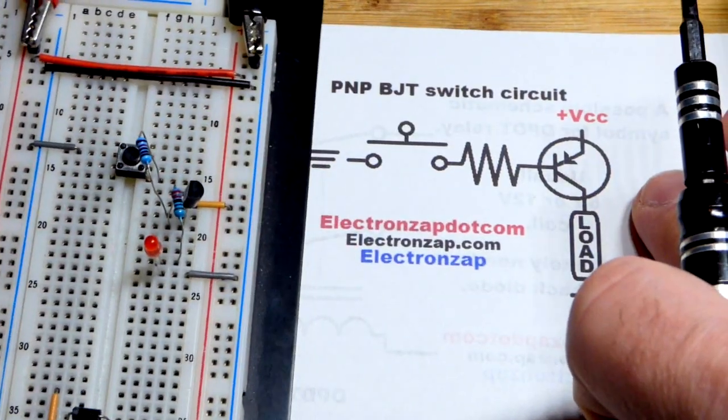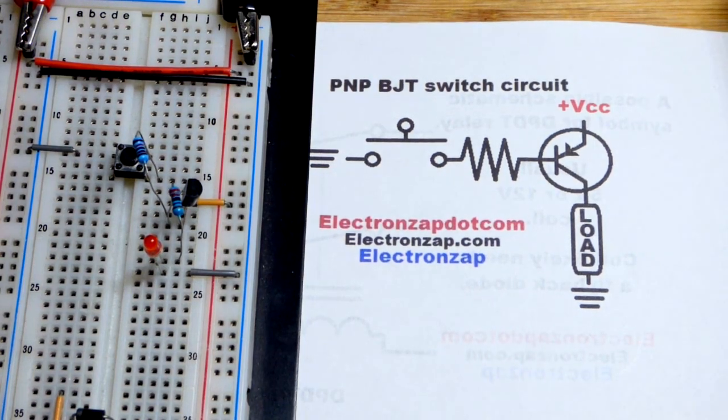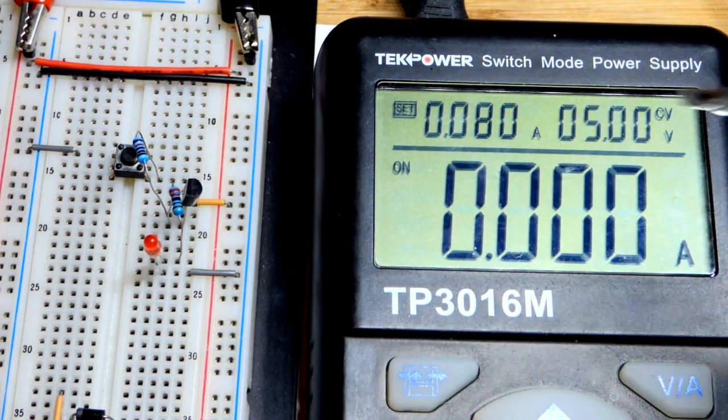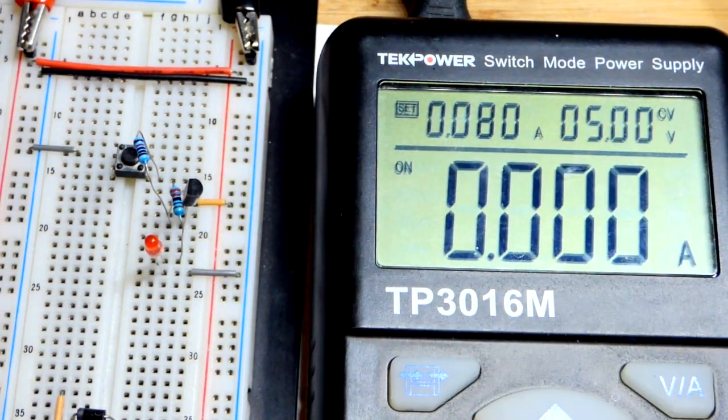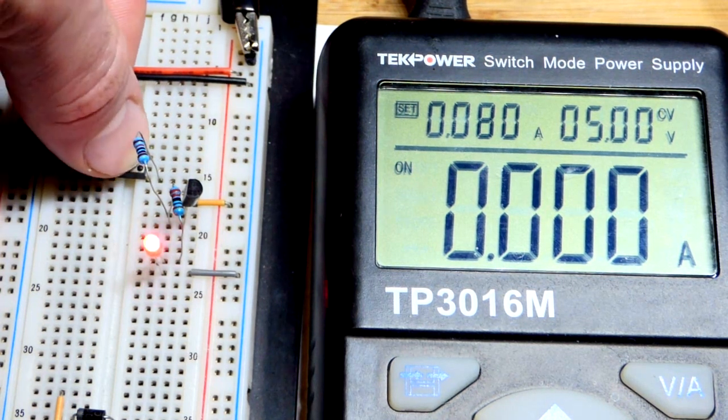We have our circuit right here. And I'll show that we got 5 volts from the supply. It is on now, but the LED is off. Until I press the button.